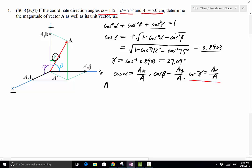Therefore, Aᵧ over A equals to cosine gamma, which is 0.8903. From here, because we know Aᵧ equals to 5 centimeter, so A equals to 5 centimeter over 0.8903. Therefore, it is 5.62 centimeter.